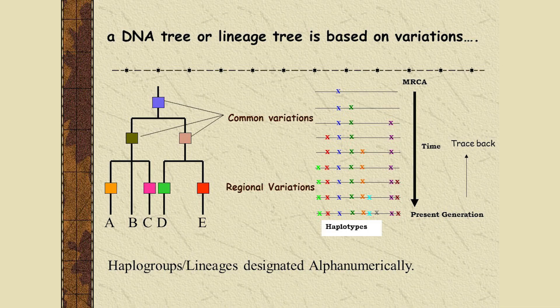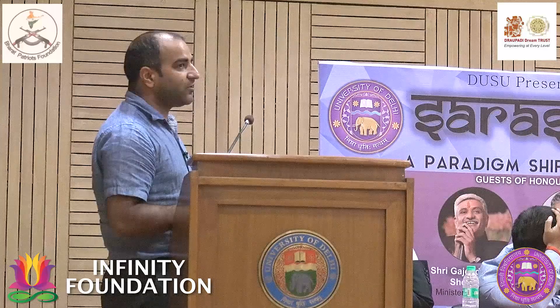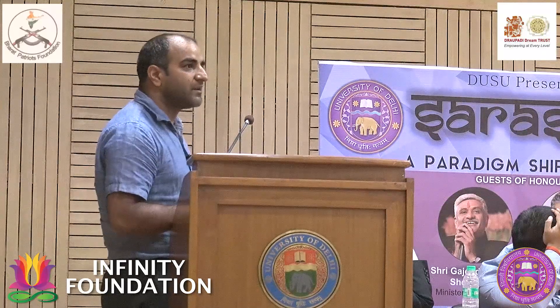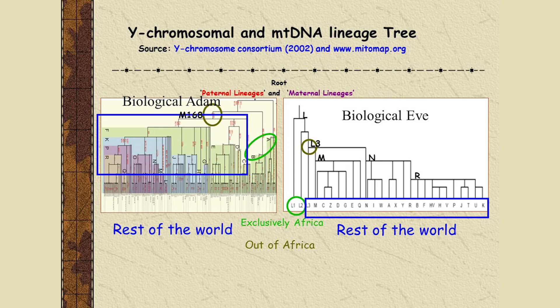Once a variation has occurred, more variations come in over time. What we do is study present-day variations and trace back to find the most common ancestor — this forms the phylogenetic tree. The male phylogenetic tree uses lineages called haplogroups, where each haplogroup is defined by a specific DNA variation, and the same applies to mitochondrial DNA.